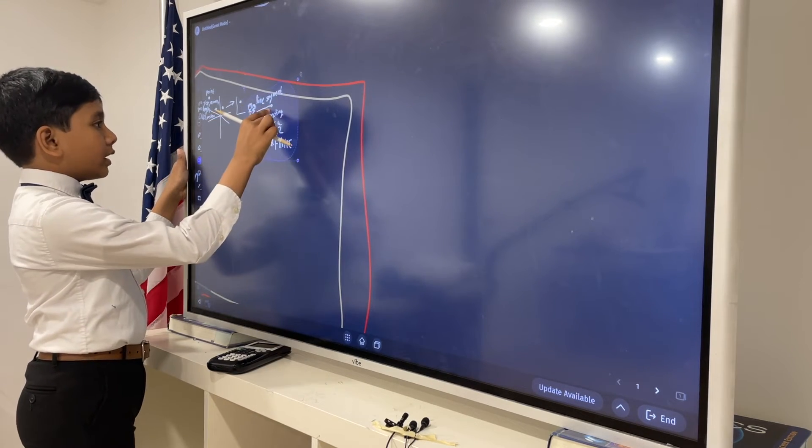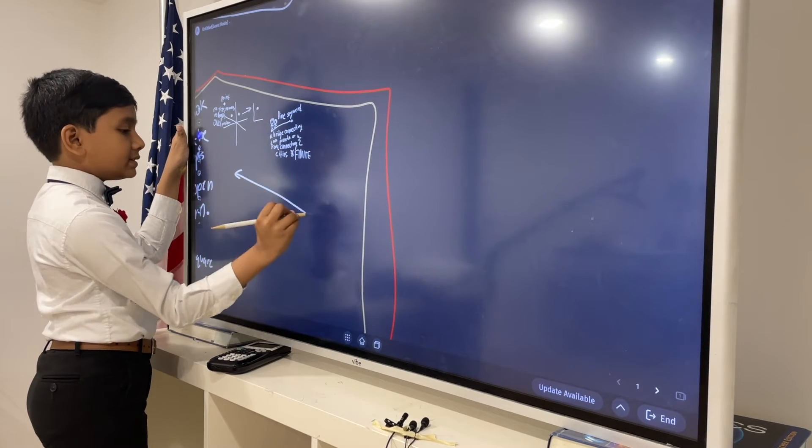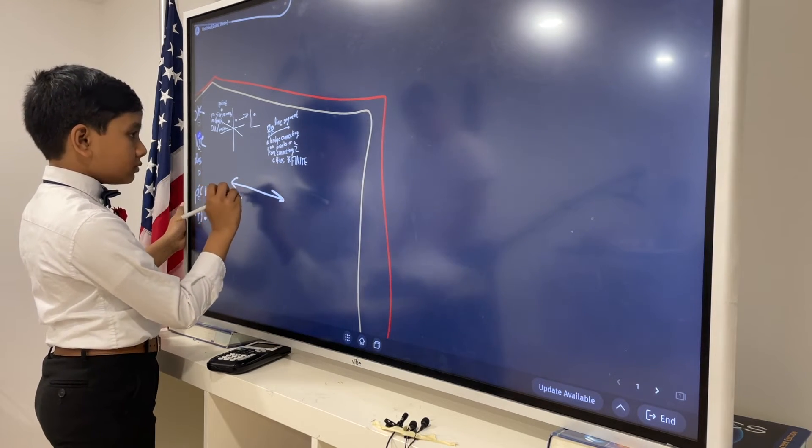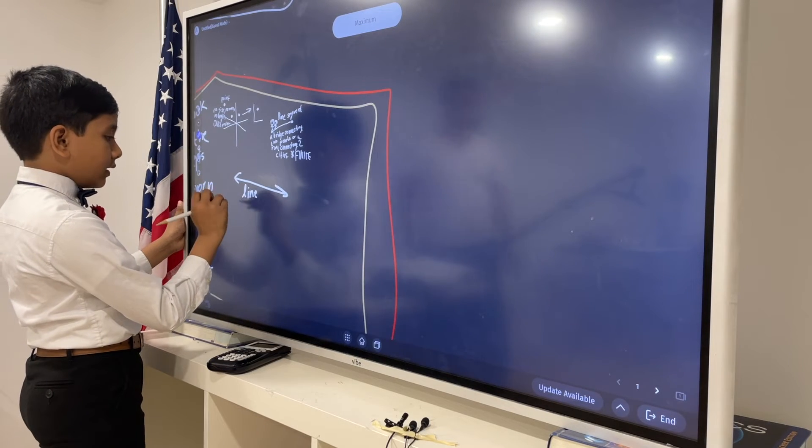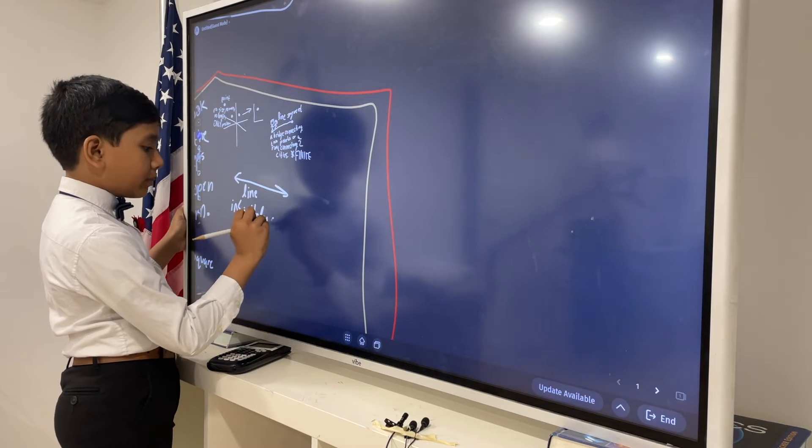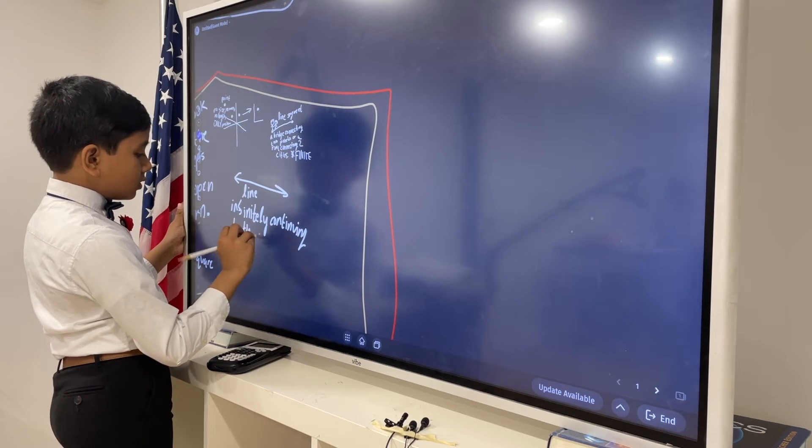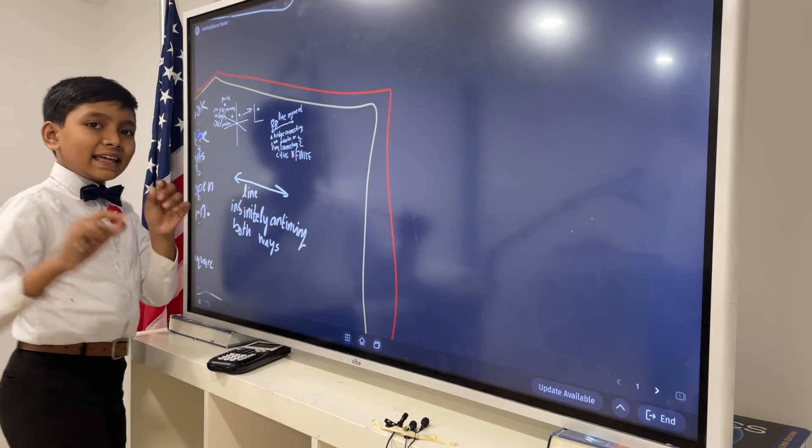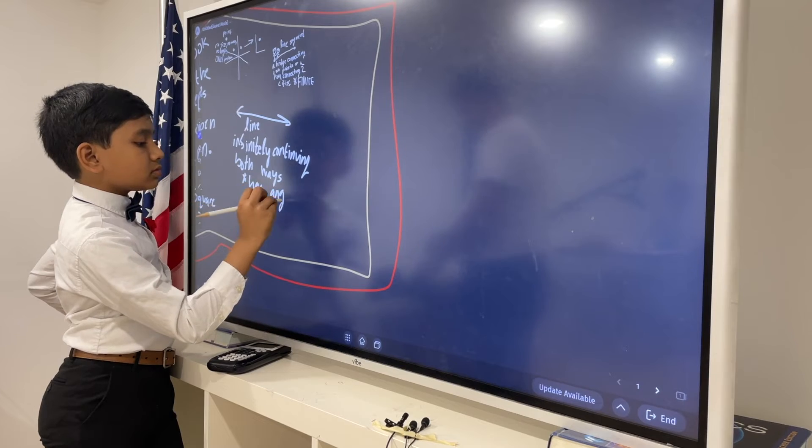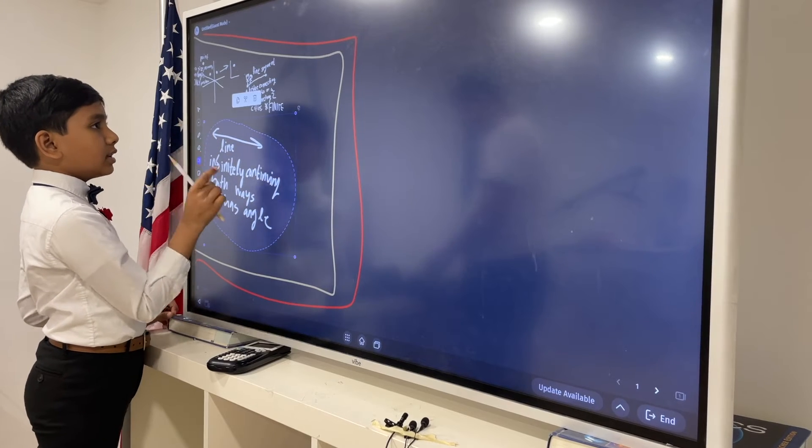So, why is it called a line segment? Well, the name line is already taken by this thing. The infinite line. Infinite, we continue it both ways. However, it can be angled to point in a certain direction. It has angles. So, that is a line.